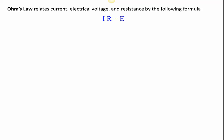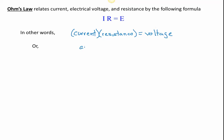Ohm's Law relates the current, the electrical voltage, and the resistance by the formula I times R equals E. In words: the current (I) multiplied by the resistance (R) is equal to the electrical voltage. Looking at the units, amps multiplied by ohms is equal to volts — or in symbols, A times omega equals V.